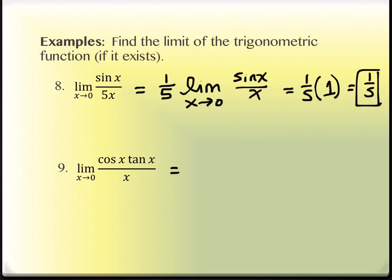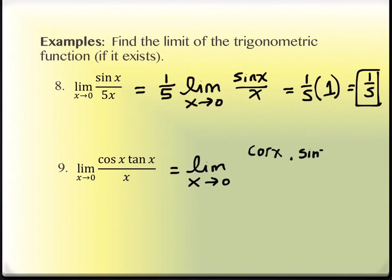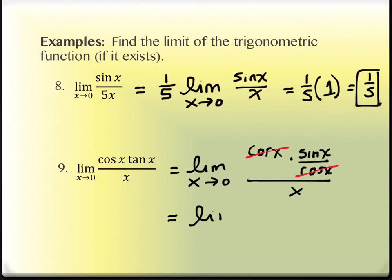The last example involves cosine times tangent. We're going to use trig identities to simplify, recalling that tangent is sine of x over cosine of x. So we have cosine of x times sine of x over cosine of x, all over x. The cosine factors cancel, and we end up with the limit as x approaches 0 of sine of x over x — one of our special trig functions — which equals 1.